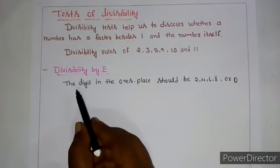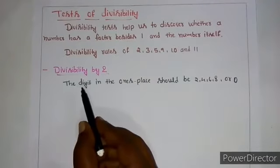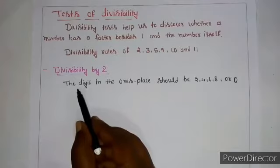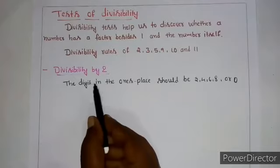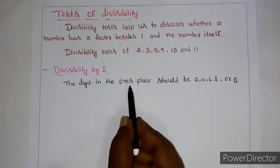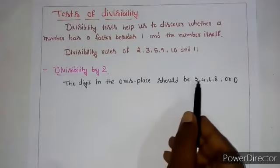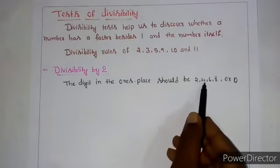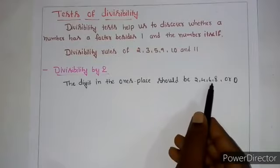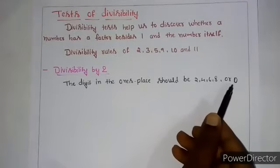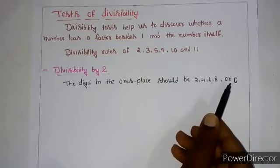The given number is divisible by 2 if the digit in the 1's place should be 2, 4, 6, 8 or 0.